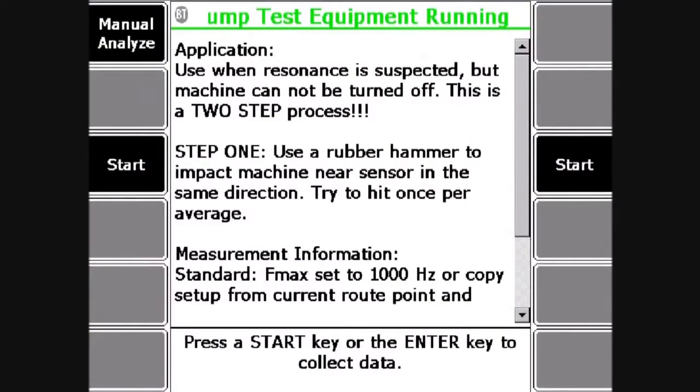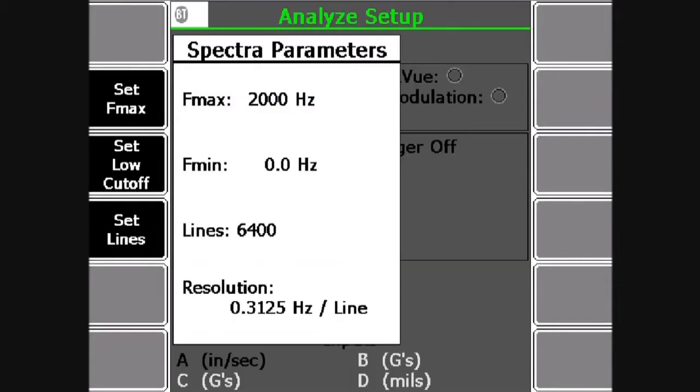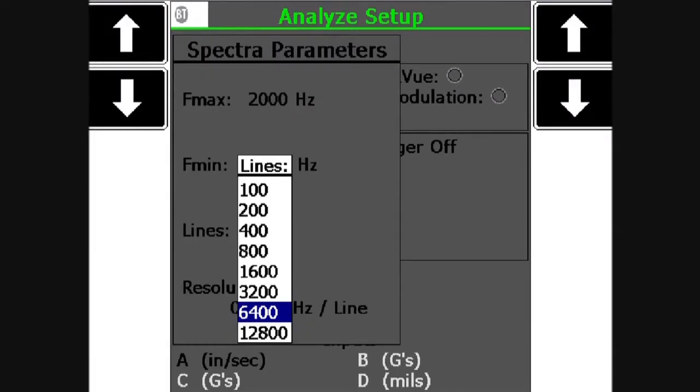Now I'm going to press F1 and adjust my setup here. My F max is 2000 Hertz. My lines are 6400. So I'm going to press F2. I'm going to lower my number of lines here. I don't need that much resolution. I'm going to take it up to 800.